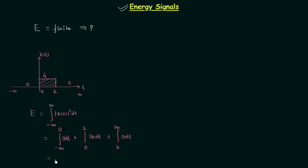So we have 16t with lower limit 0 and upper limit 2, which gives us 32 joules. The total energy of signal x(t) is equal to 32 joules, and it is a finite value. So we can see that this signal is an energy signal.